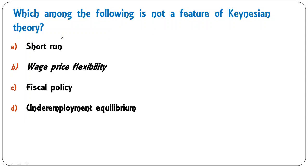Next question: which among the following is not a feature of Keynesian theory — short run, wage-price flexibility, fiscal policy, or underemployment equilibrium? The correct answer is wage-price flexibility, which was an assumption of classical theory. Keynes believed wages especially are more sticky. Keynes' theory is for the short run, gives importance to fiscal policy, and believes in underemployment equilibrium. So B is the correct answer — it is not a feature of Keynesian theory.